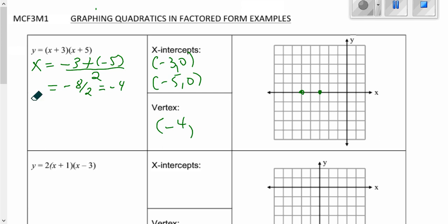To find the y-coordinate of the vertex we're simply going to take our negative 4 and plug it into the original equation. So it was negative 4 plus 3 and negative 4 plus 5. So negative 4 plus 3 is negative 1 and we're going to multiply that by negative 4 plus 5 which is positive 1. So our answer is negative 1. So that is the y-coordinate of the vertex.